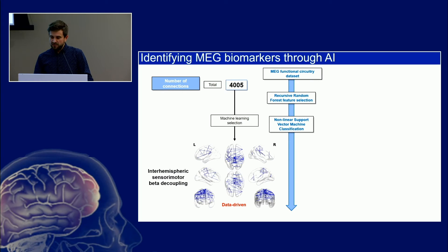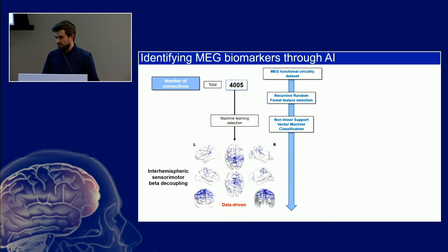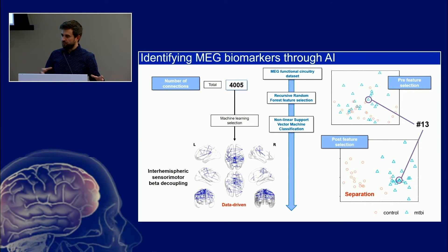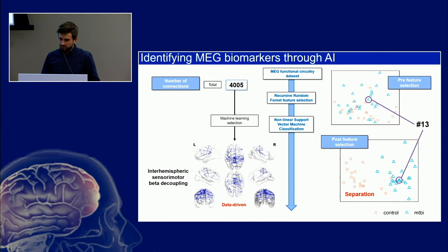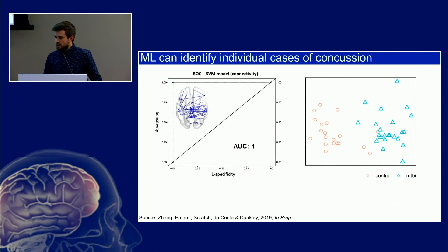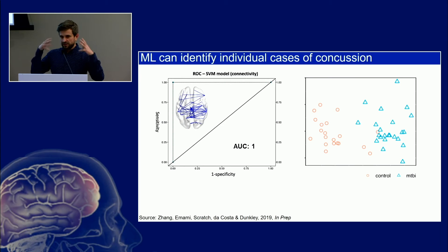We find that it's actually inter-hemispheric sensory motor decoupling — disconnectivity, decommunication at this very fast brain rhythm — the brain rhythm we can really only pick up reliably and resolve in space using MEG. With post-feature selection, there's a clear two-dimensional separation, with this individual case right there. Here's our area under the curve, and we can basically, with 100% accuracy, using this well-tolerated five-minute brain scan where you don't need any gels or caps, separate out completely a concussion case from a control case.